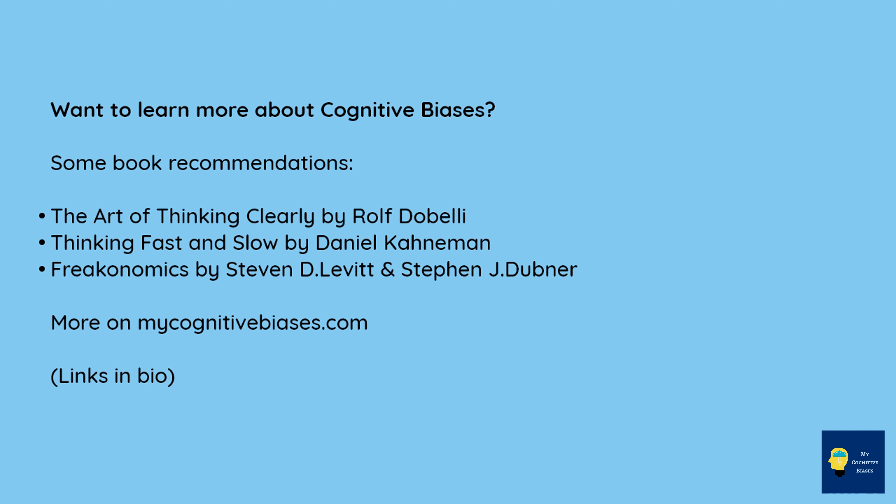Want to learn more about cognitive biases? Some book recommendations: The Art of Thinking Clearly by Rolf Dobelli, Thinking Fast and Slow by Daniel Kahneman, and Freakonomics by Stephen D. Levitt and Stephen J. Dubner.